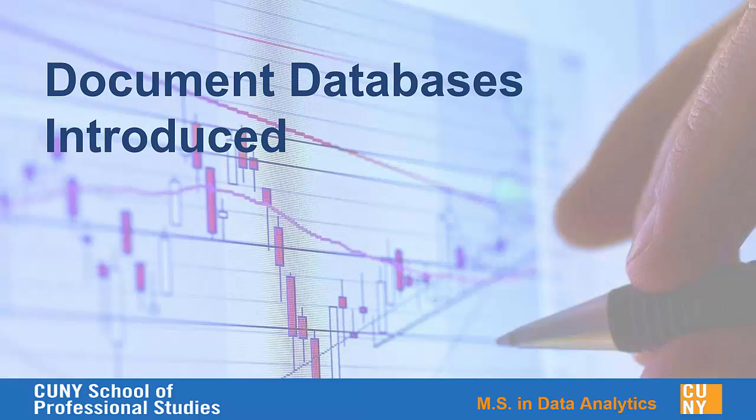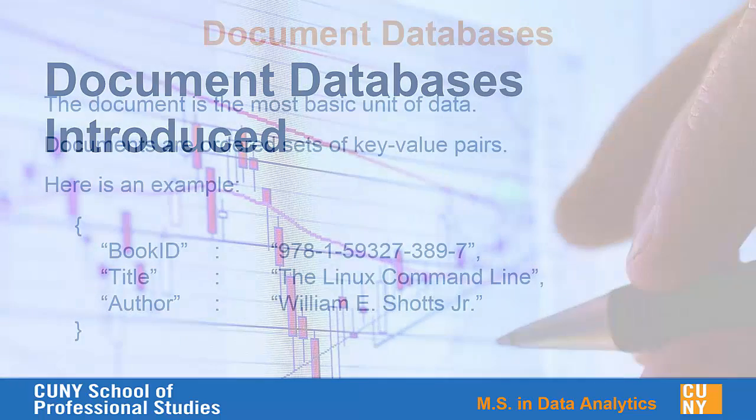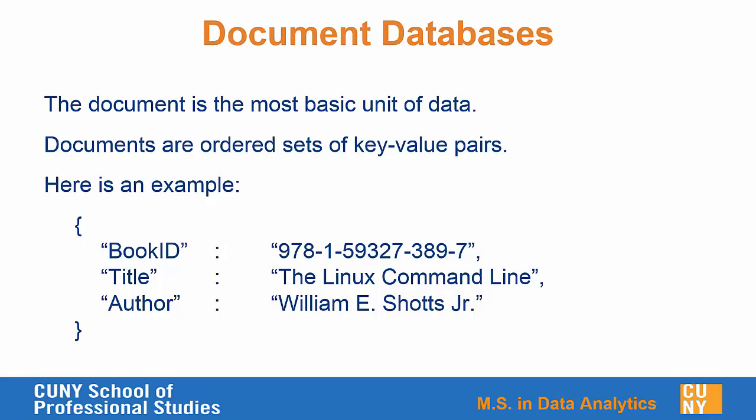The first type of NoSQL database we look at in this course is document databases. In particular, we're going to focus on MongoDB. In a document database, the document is the most basic unit of data. It's similar to what we would call a row in a SQL database. Documents are simply ordered sets of key-value pairs. It's important to note that document databases do use a key-value structure of sorts.